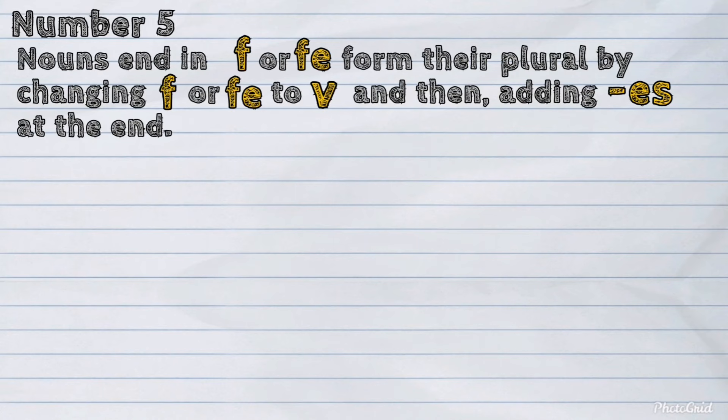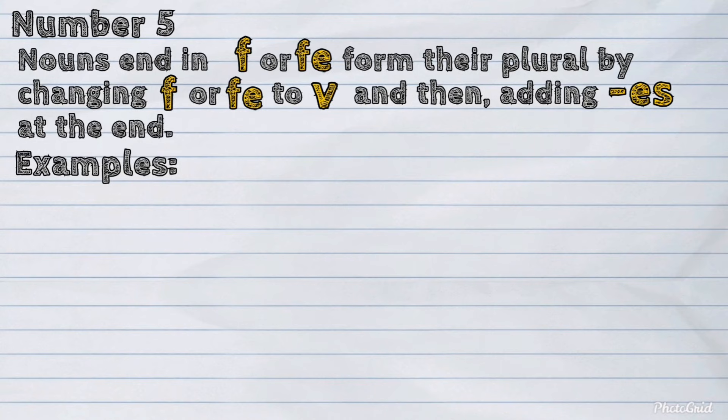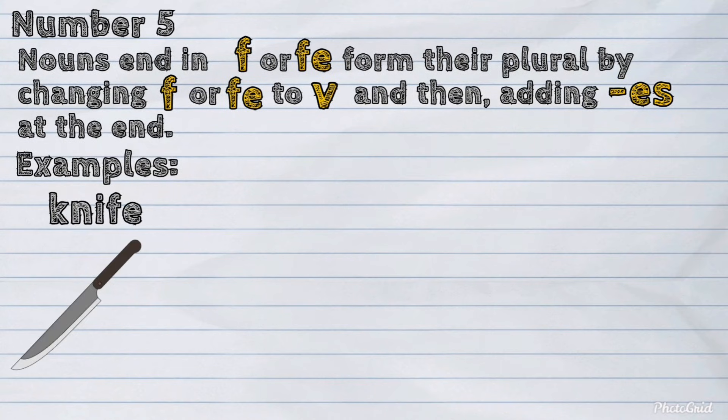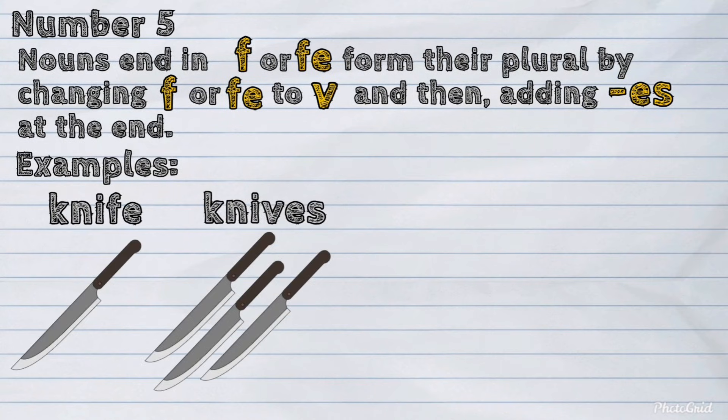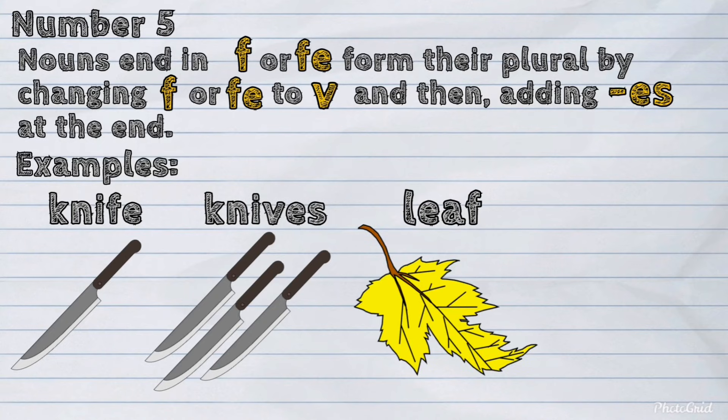Number five. Nouns ending in 'f' or 'fe' form their plural by changing 'f' or 'fe' to 'v' and then adding 'es' at the end. Examples: knife, knives; leaf, leaves.